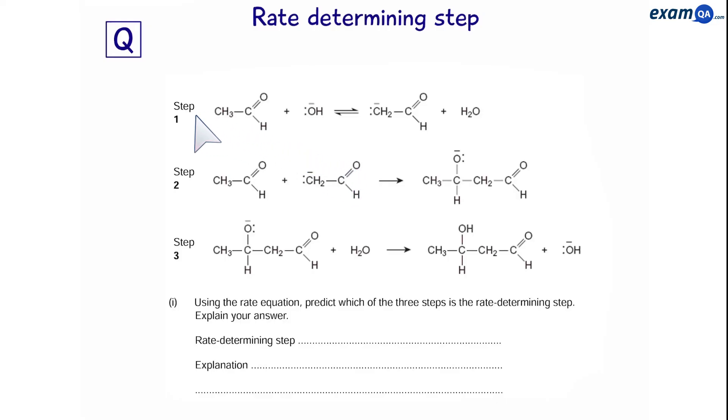So, we have three steps. Using the rate equation, which is the following, deduce which step is the rate determining step. So, this is our rate equation and step 1 matches what we have in the rate equation. One molecule of ethanol and one hydroxide ion.